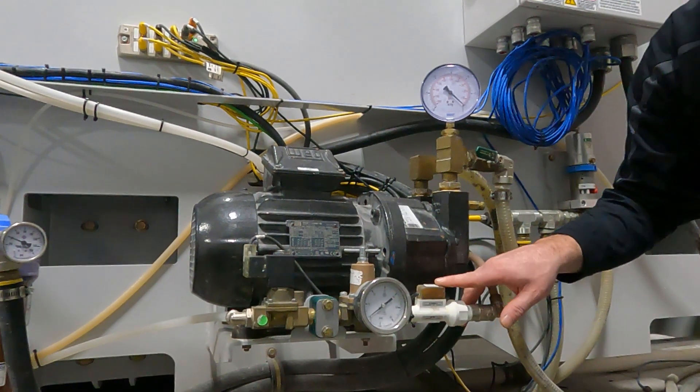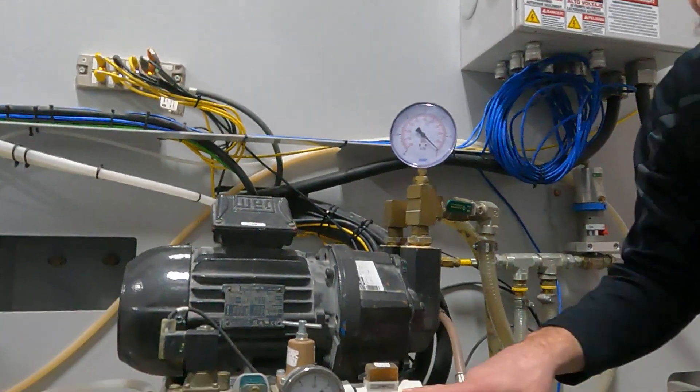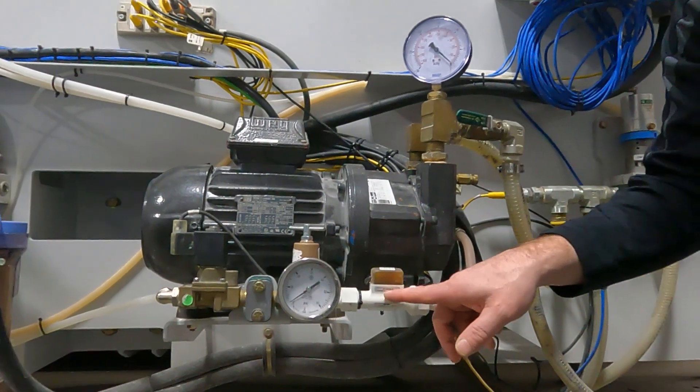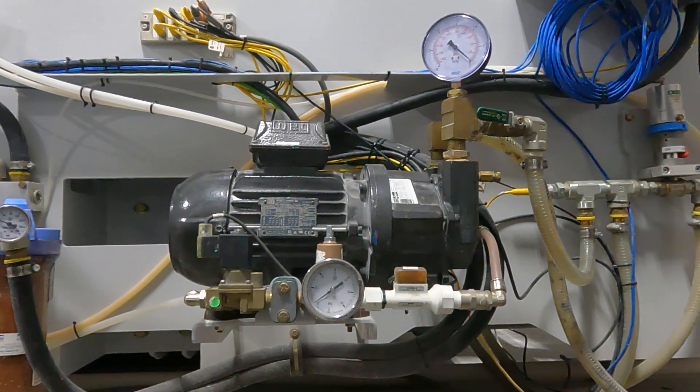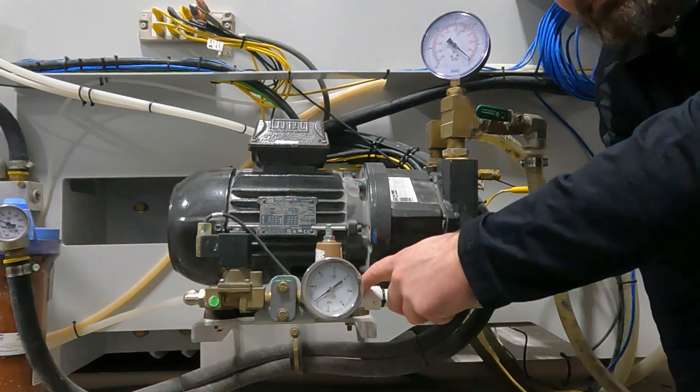Now here's our vacuum pump flow switch. This is what's telling us we have no flow. We can take this out also and clean that up if we have good water flow all the way up to this.